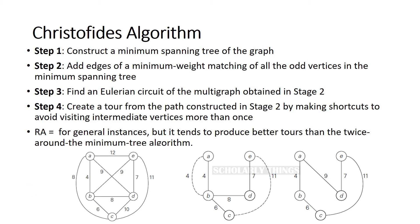Basically, it obtains a multigraph, that is multiple edge graph, by adding to the graph the edges of a minimum weight matching of all the odd degree vertices in its minimum spanning tree.